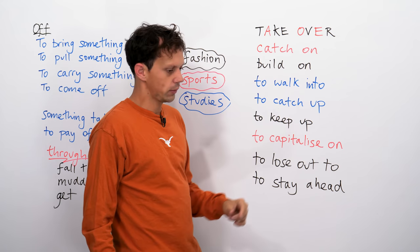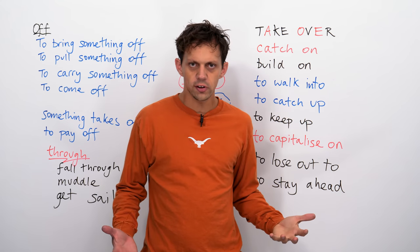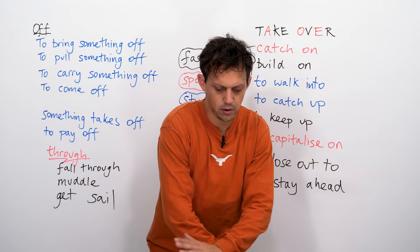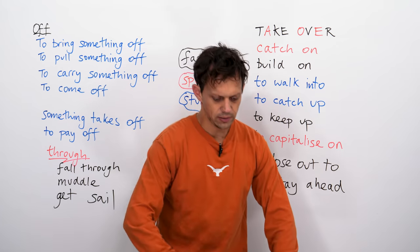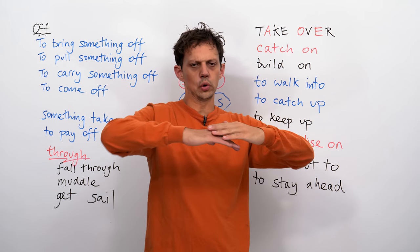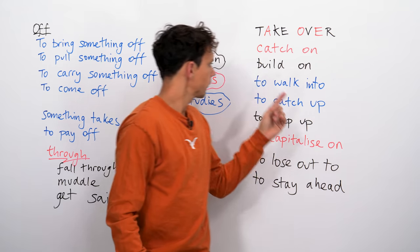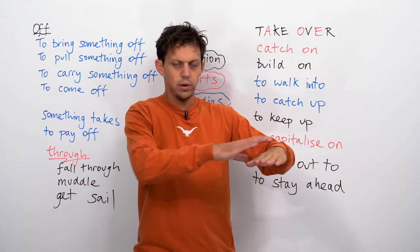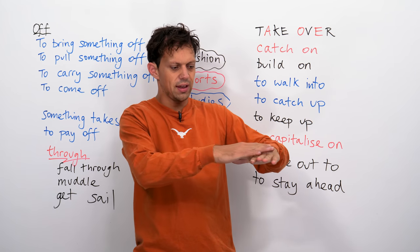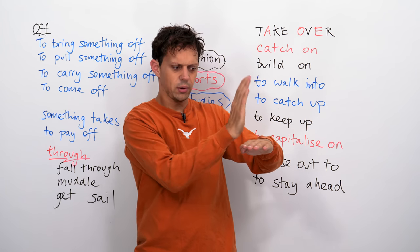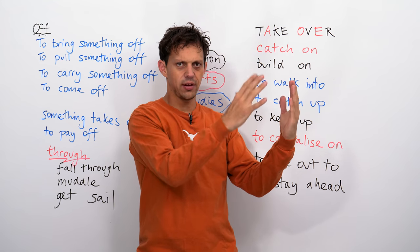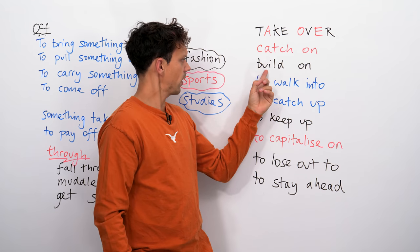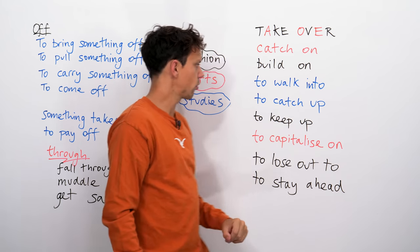To build on. So, builders, what do they do? They often make houses. They're going to start with foundations, and then they're going to build the walls and the roof. So, to build on means we have had this success, and we're going to use this, and we're going to continue from there to make something even bigger. So, we have a firm foundation and we're going to continue growing.